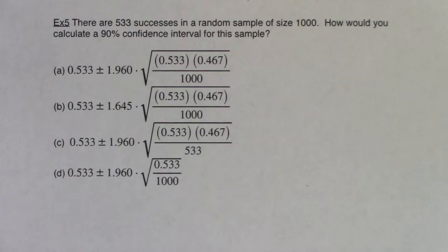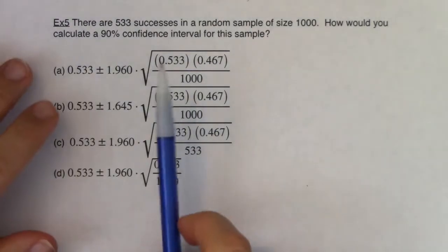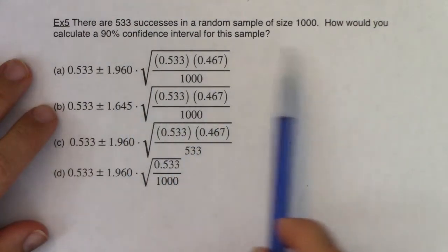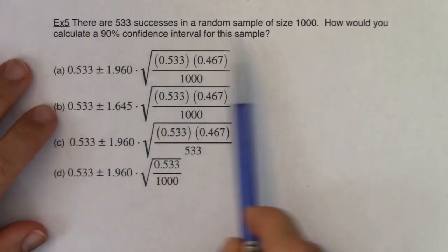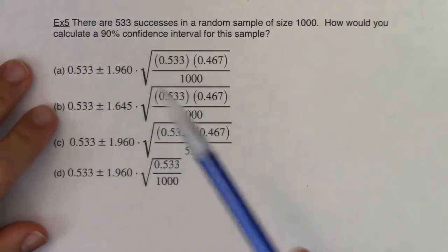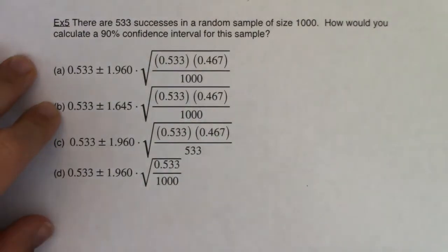So it says there are 533 successes in a random sample of size 1,000. How would you calculate the 90% confidence interval for this sample? So this is really vague. It's not telling you a whole lot of information. If you look through here, there's nothing about proportions. There's no units.